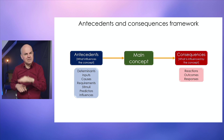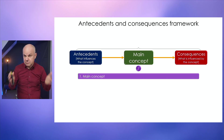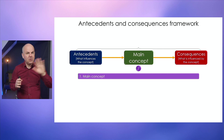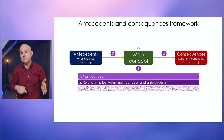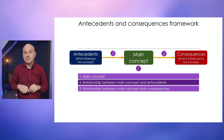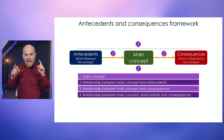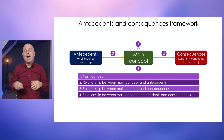This is a simplified version of the antecedents and consequences framework; the full version is explained in the video collections. From this framework we can identify four areas to research: the main concept itself; the relationship between antecedents and the main concept; the relationship between the main concept and consequences; and sometimes all of the above — the main concept, the relationship between antecedents and the main concept, and the relationship between the main concept and consequences. Let's look at some examples.